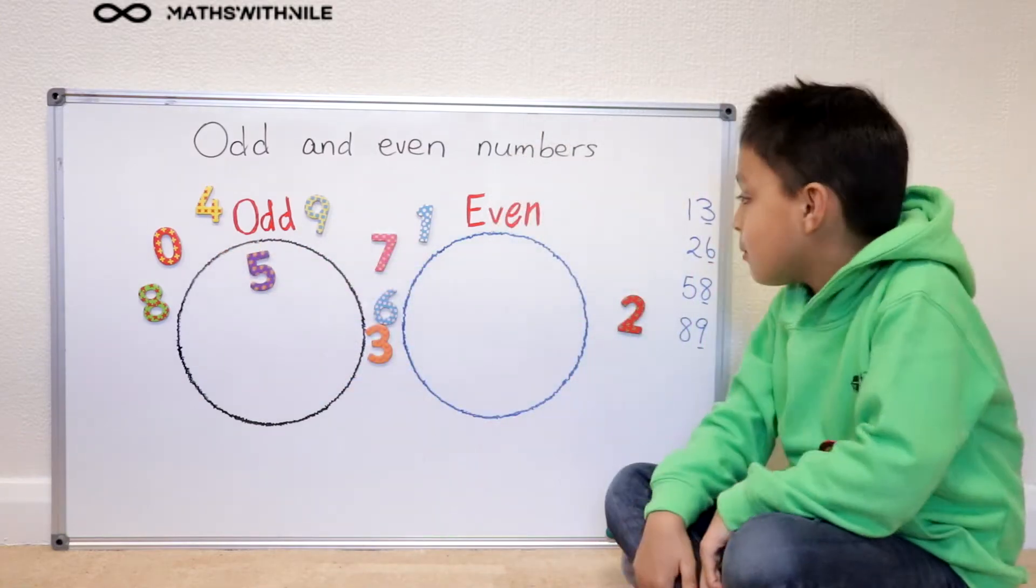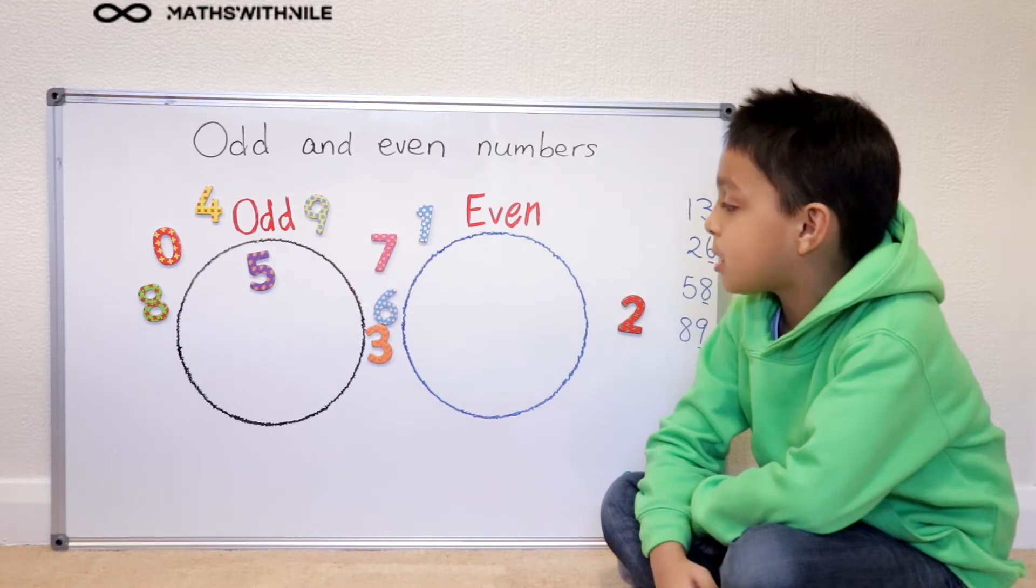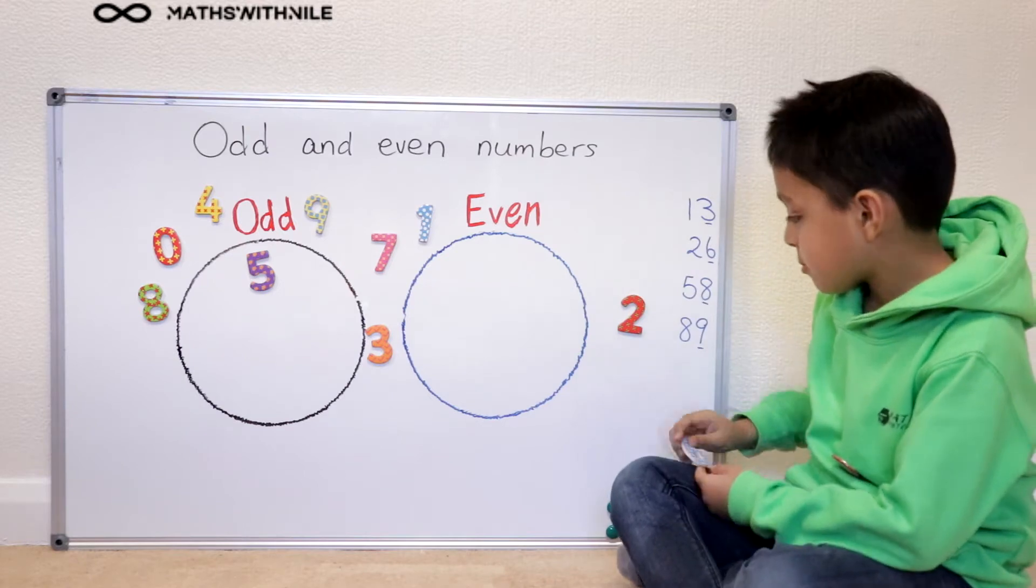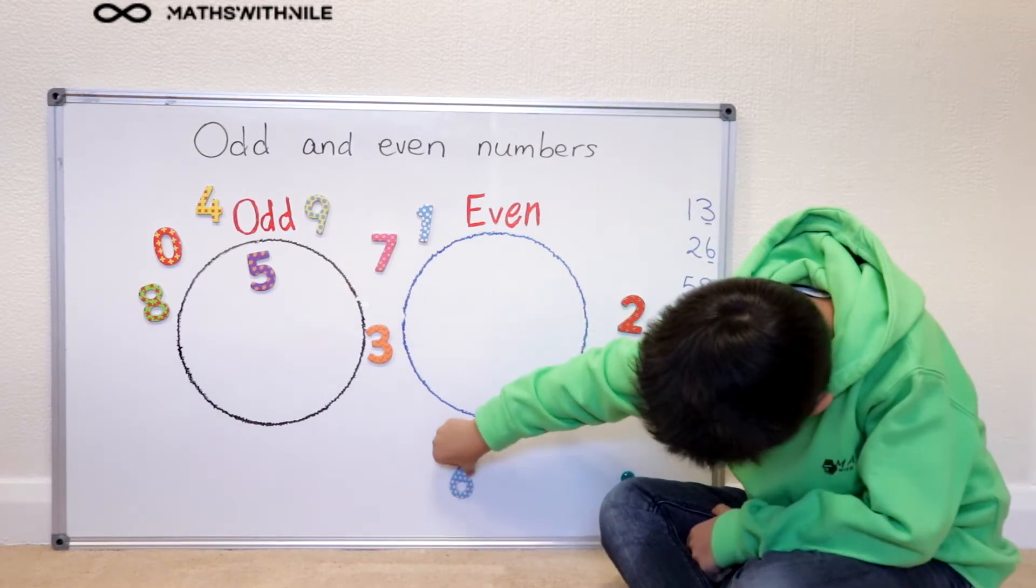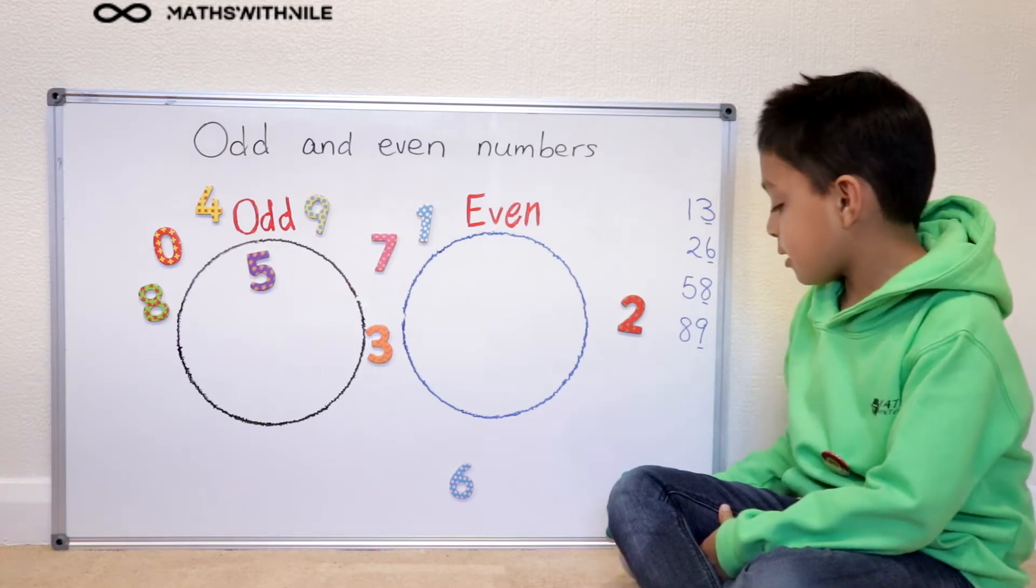So now I'm going to pick another number randomly and I go with six. I'm going to put that there and then I'm going to get six.